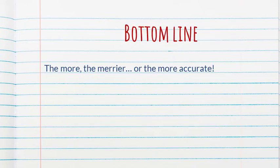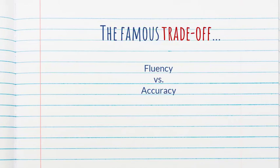And so the bottom line appears to be the more the merrier, or at least the more accurate. But as we have hinted at in previous episodes, there is the famous or infamous trade-off of fluency versus accuracy. So you get more words and less accuracy, or you get more accuracy and fewer words.